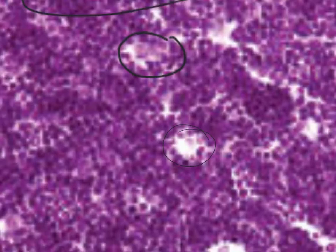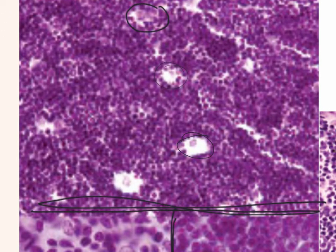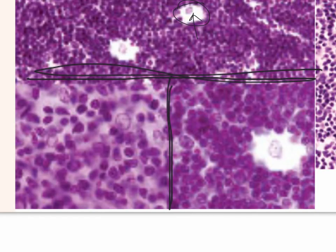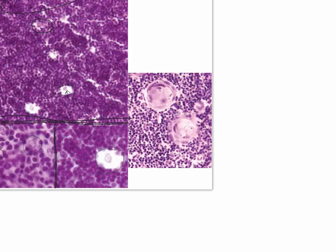When looking at the thymus and you see clear areas, those typically represent areas where there are macrophages. A lymphocyte is visible in the middle - it was phagocytized by the macrophage. If a lymphocyte doesn't go through negative and positive selection, it gets phagocytized and undergoes apoptosis. Throughout the tissue you can also see more epithelial cells making up the architecture of the thymus, along with Hassall's corpuscles as you move from the cortex into the medulla.